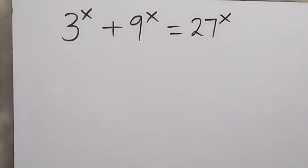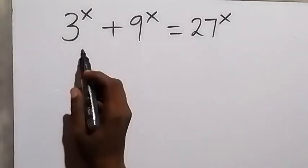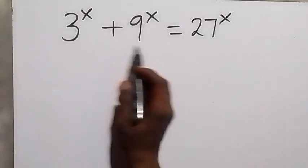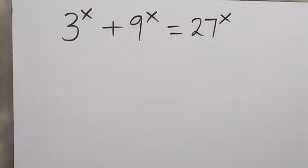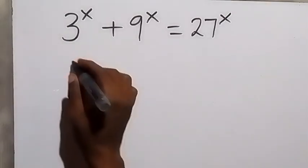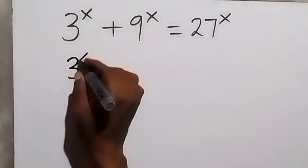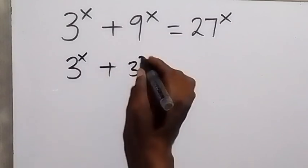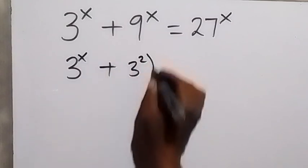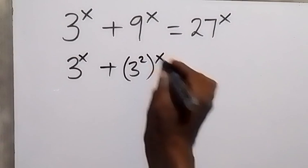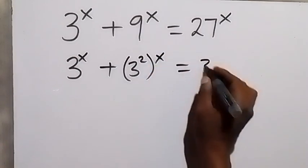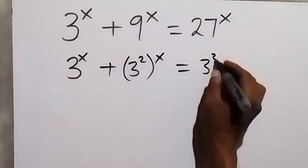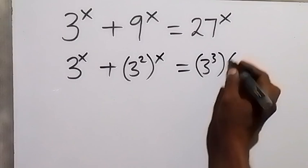Hello, you are welcome. How to solve this nice olympiad problem: 3 raised to power x plus 9 raised to power x equals to 27 raised to power x. Here we can write this as 3 raised to power x plus 3 squared, then raised to power x, equals to 3 raised to power 3, then raised to power x.